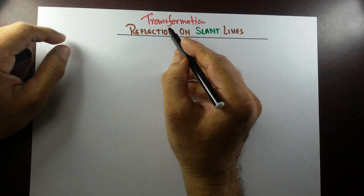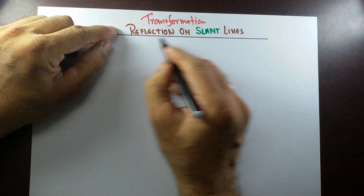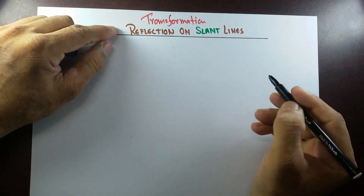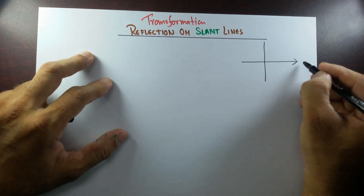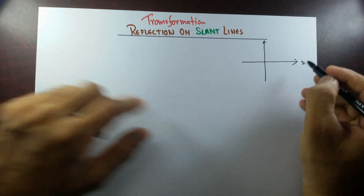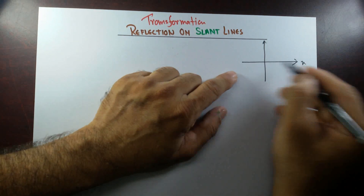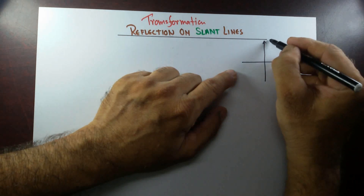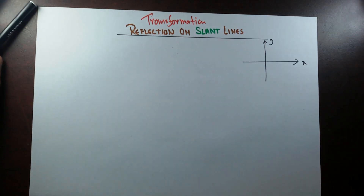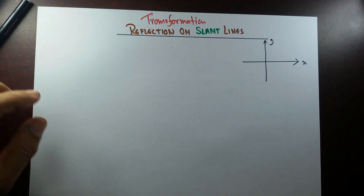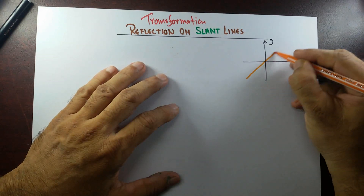Good morning. On today's lesson, I'll cover Transformation: Reflection on Slant Lines. In the previous videos, I showed you the reflection on the x-axis or horizontal line, and the reflection on the y-axis or vertical line. In this video, I'll show the reflection on a slant line.